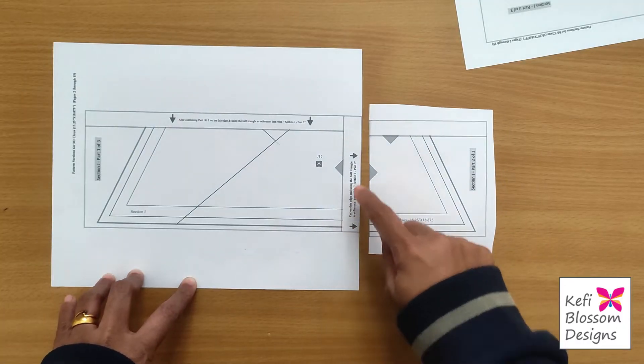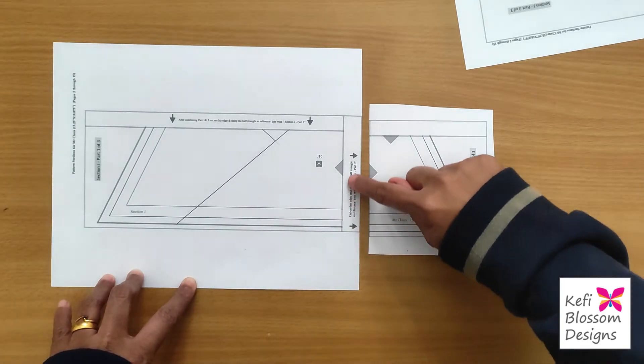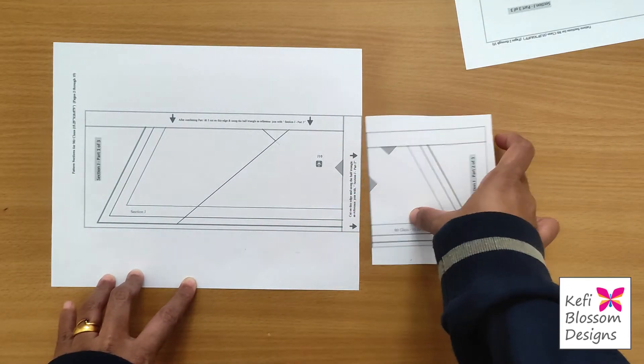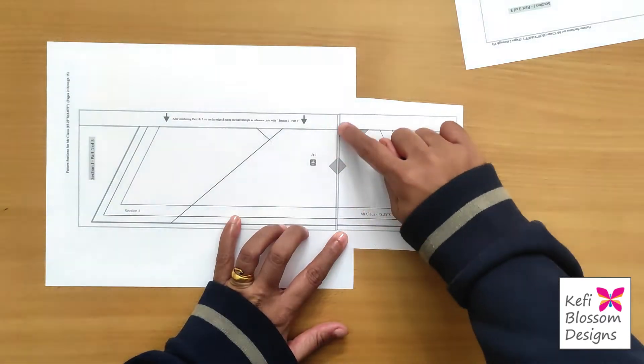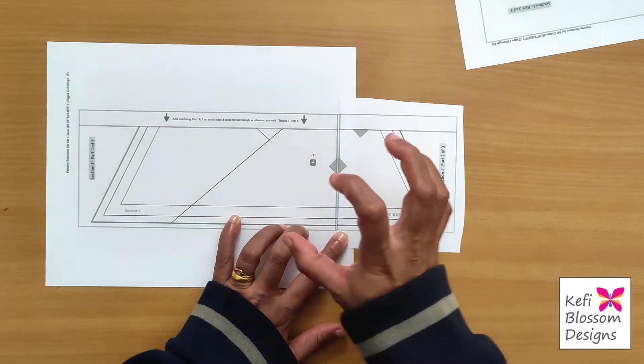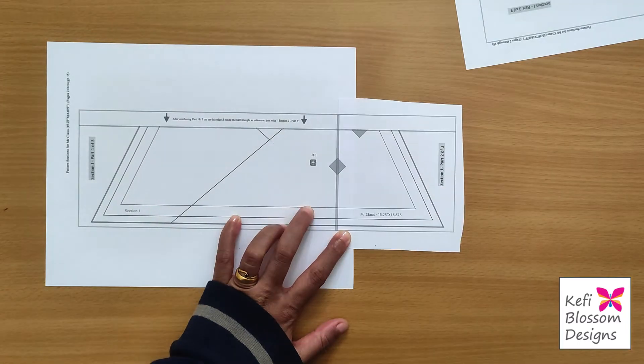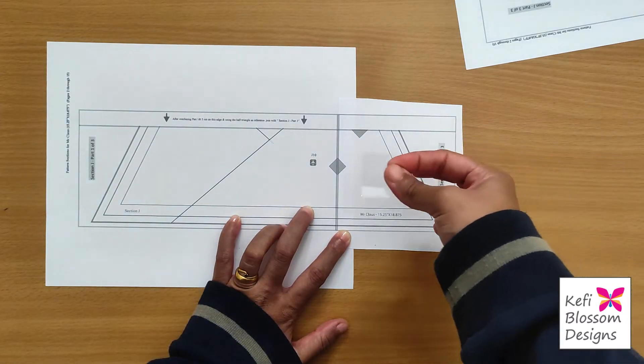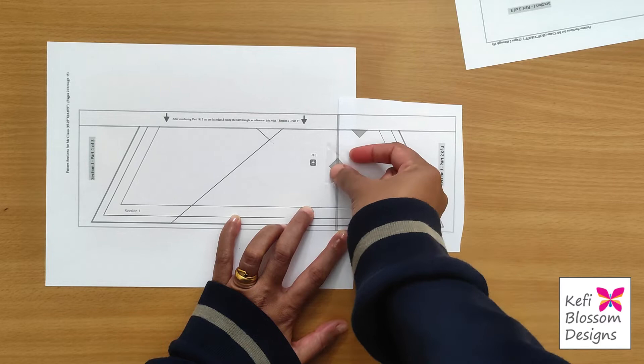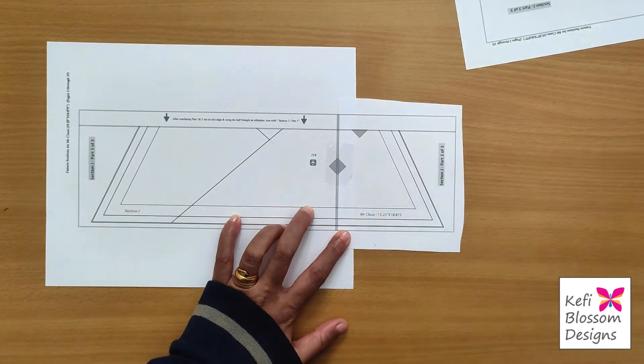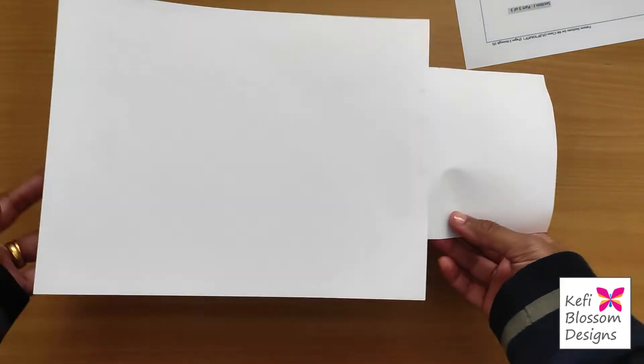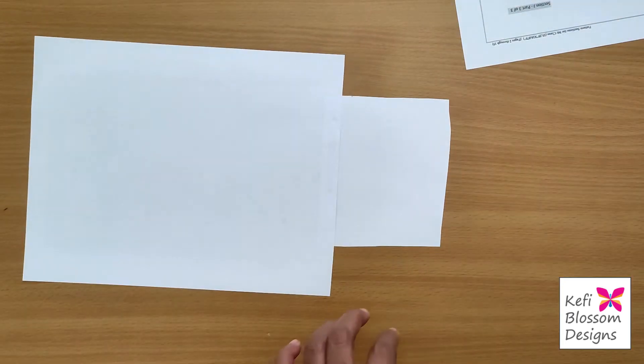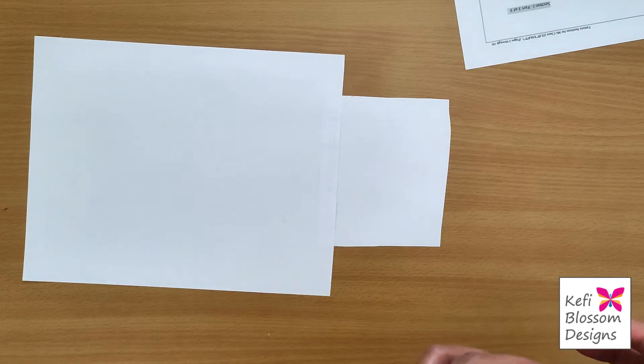Again, like before, whichever part has this extra side, I'll keep that down and the other side, I'll keep it on top. And then match these points and then use the sellotape to join them. Once you're okay with the placement, you can take a bit of sellotape and just place it over it. Now taping the back part is again optional, but since this is a big section, I prefer to tape it.